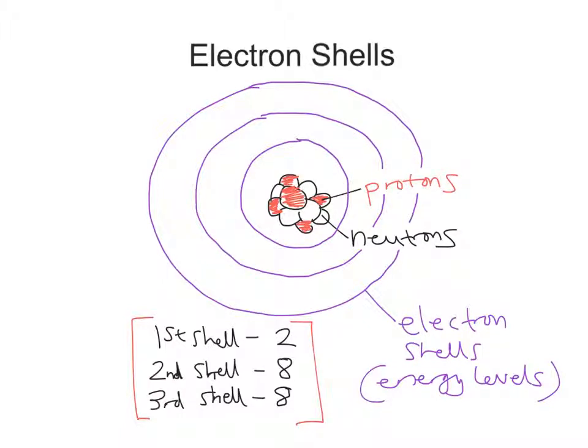Now, in this particular example, I've drawn a nucleus with five protons. Now, if we take the proton number as five, then that would refer to boron, B-O-R-O-N on the periodic table.